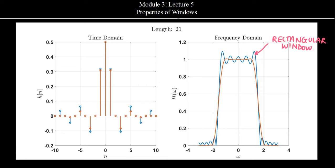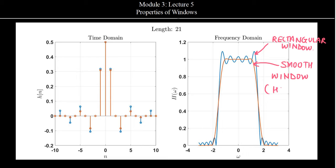Now in order to remove these ripples, what we had considered was a smooth truncation by using some smooth windows. After smooth truncation, the frequency domain representation we got was something like this as shown by this red color plot. So this is by smooth window, and the example which we had considered was of the Hanning window.